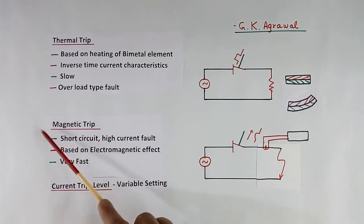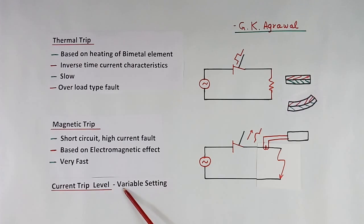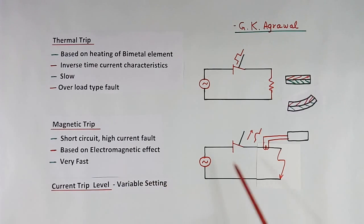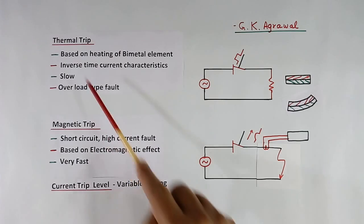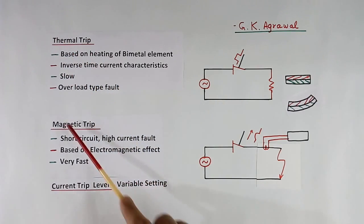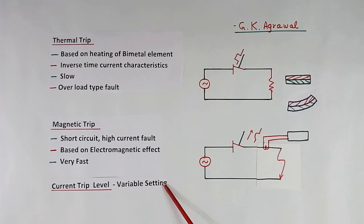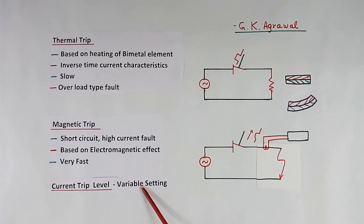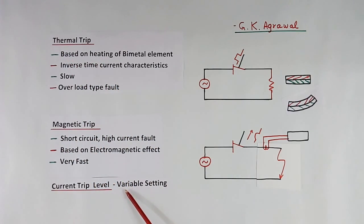For both thermal trip and magnetic trip, the current trip level will be variable in many cases. Some MCCBs will have only thermal trip variable setting, some will have only magnetic variable setting, or some will have both thermal and magnetic variable. So you can set the value to what you want.